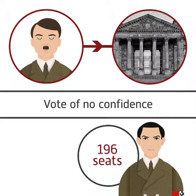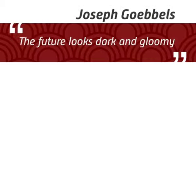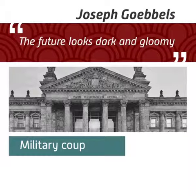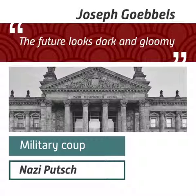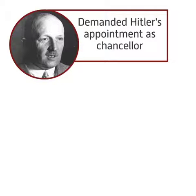The November election saw the Nazi vote reduced to 196 seats. The leadership of the party were concerned. Goebbels wrote in his diary that the future looks dark and gloomy. Nonetheless, the Nazi Party was still the largest party in the Reichstag. Concerned that there would be a military coup or Nazi putsch was growing. As a response, General von Schleicher, a former army leader, demanded his appointment as Chancellor.